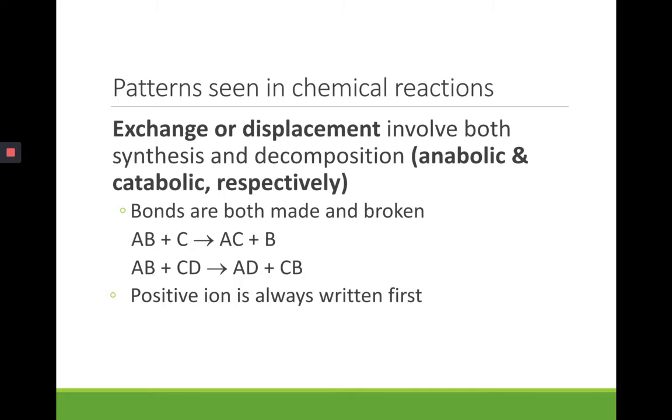In the second reaction, we're breaking two bonds between AB and CD and forming two new bonds between AD and CB. The positive ion would always be written first. So, for example, sodium chloride, if we were using that, we'd write sodium before chloride because sodium is the cation or the positive ion in the combination of sodium and chloride, whereas chloride would be the anion.